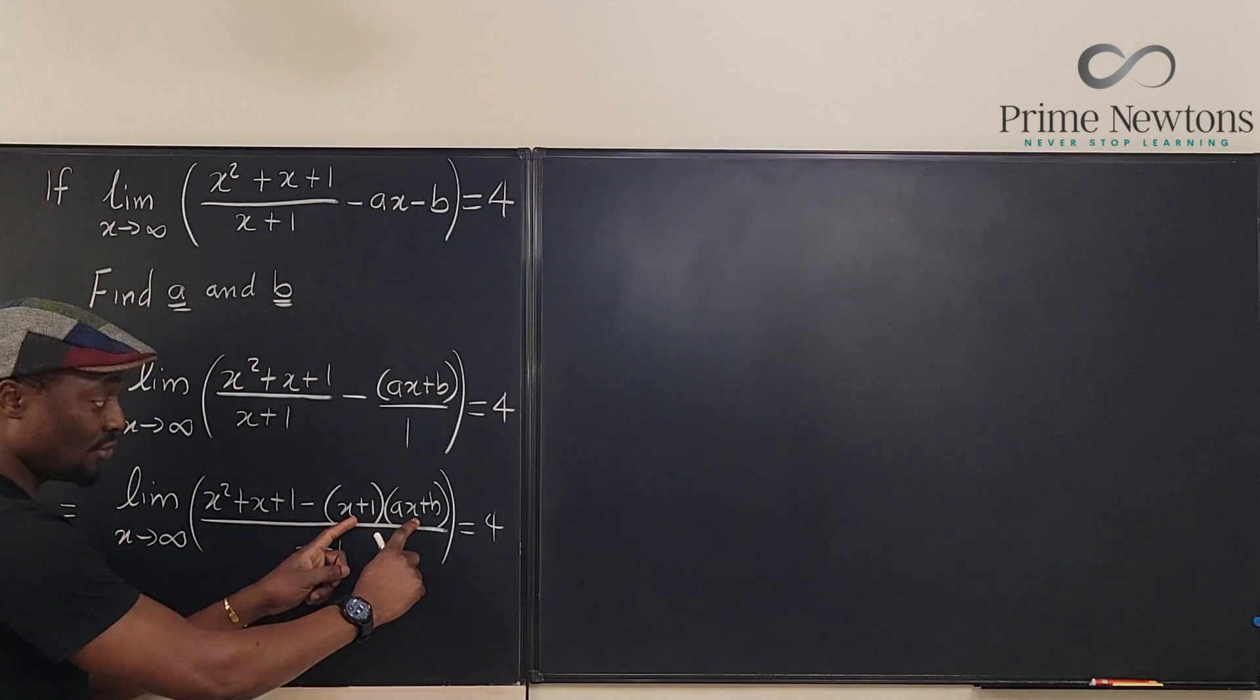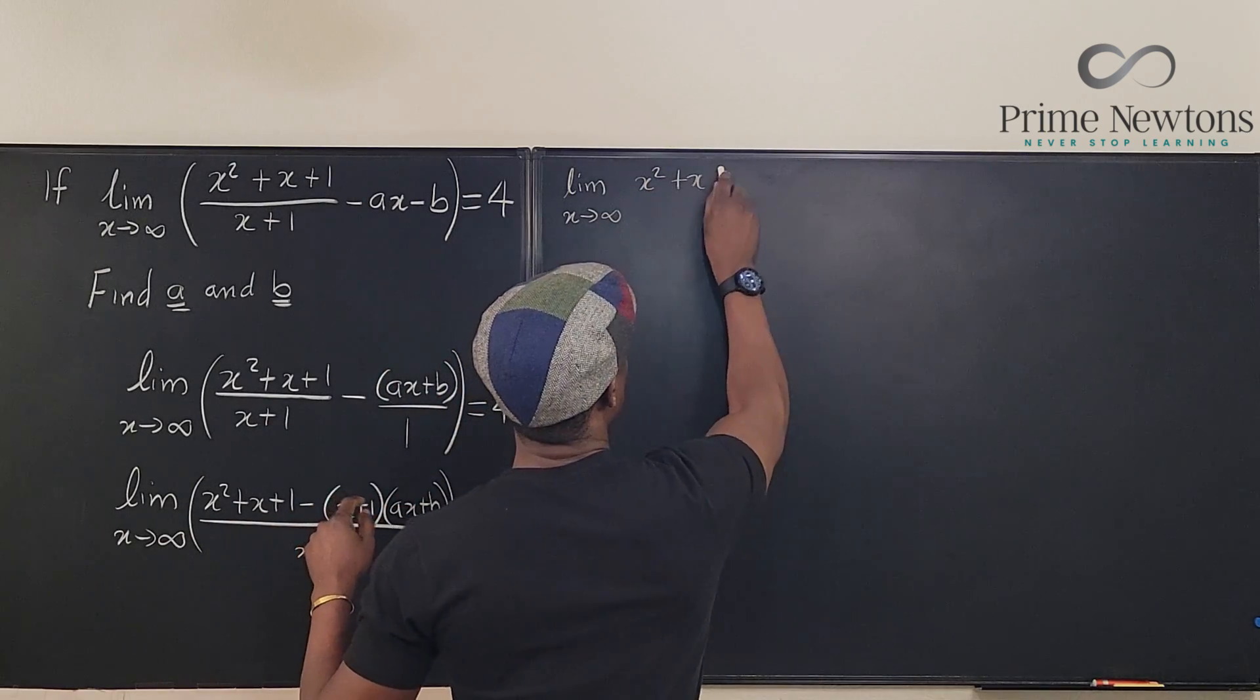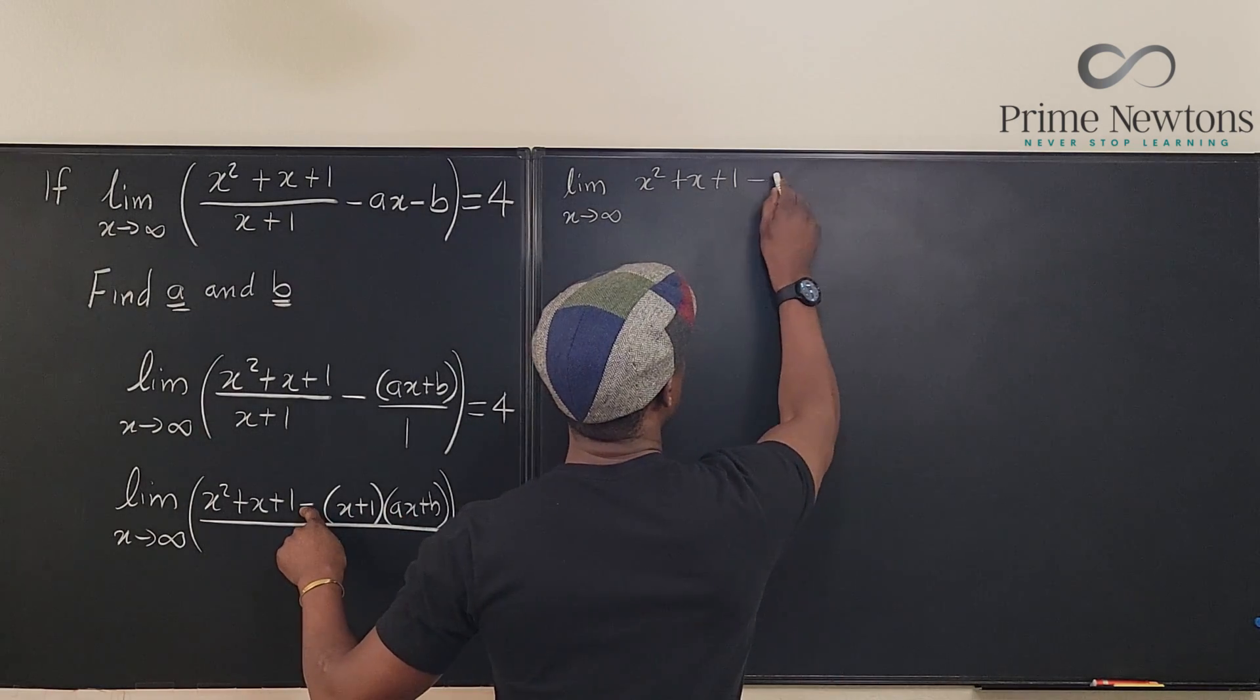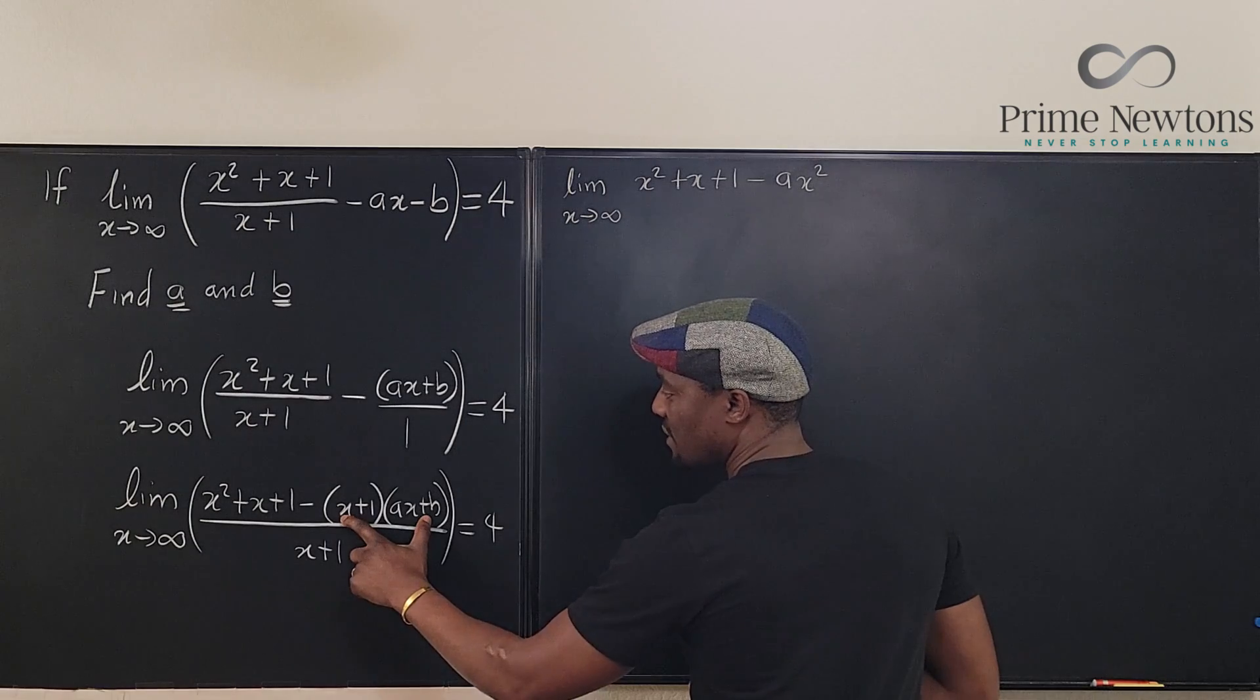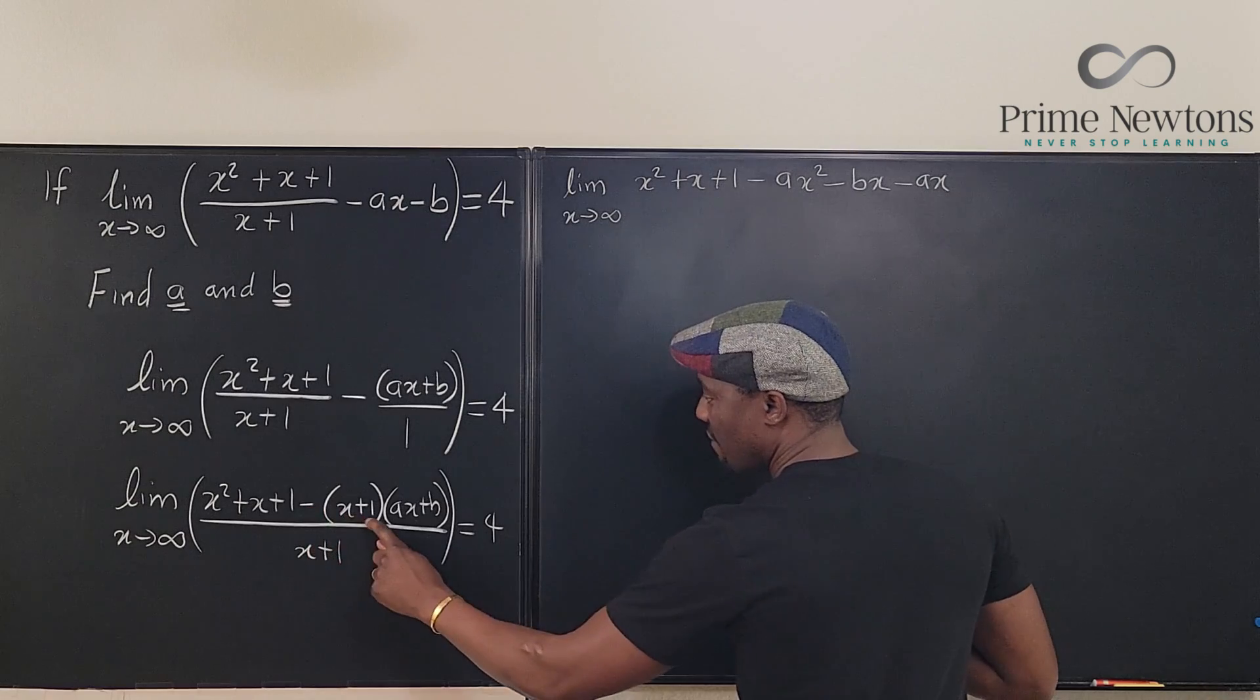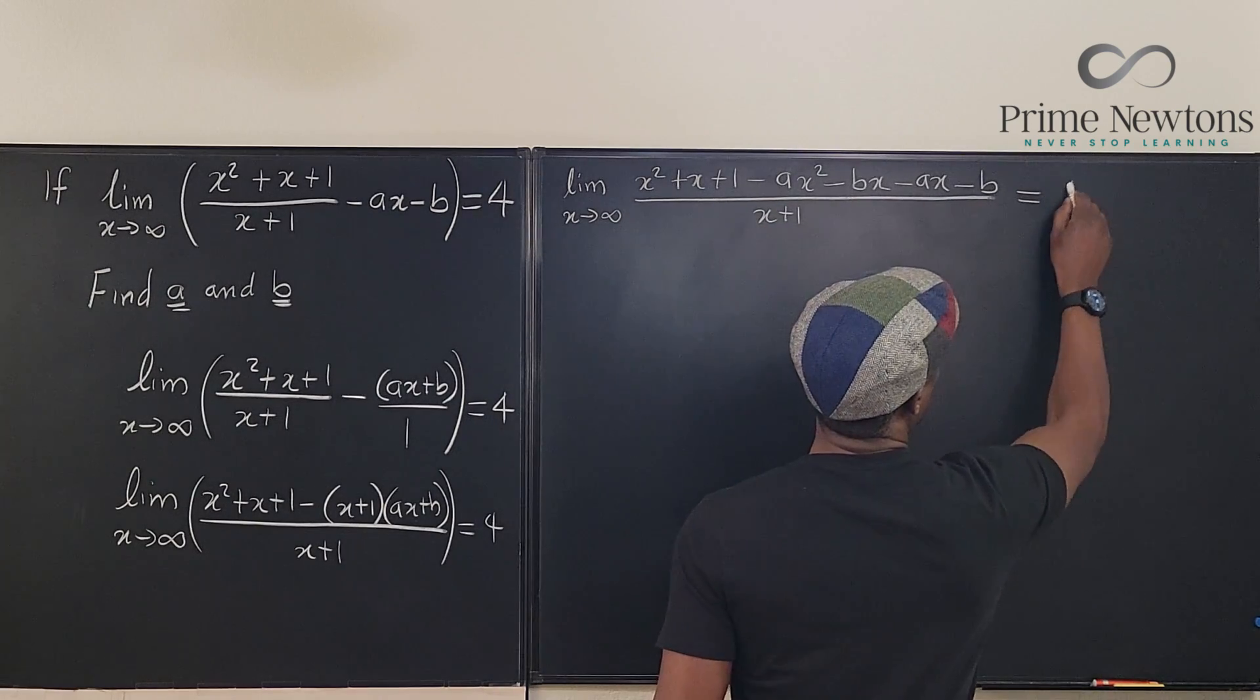So now all I need to do is distribute this. On top here I'm going to have x squared plus x plus 1. And now I start distributing. x times ax is ax squared but there's a negative. x times b is minus bx. 1 times ax is negative ax. And 1 times b is minus b. All of this divided by x plus 1. And this limit is equal to 4.